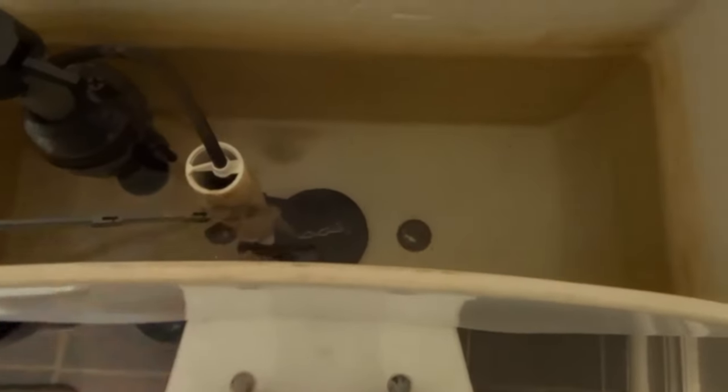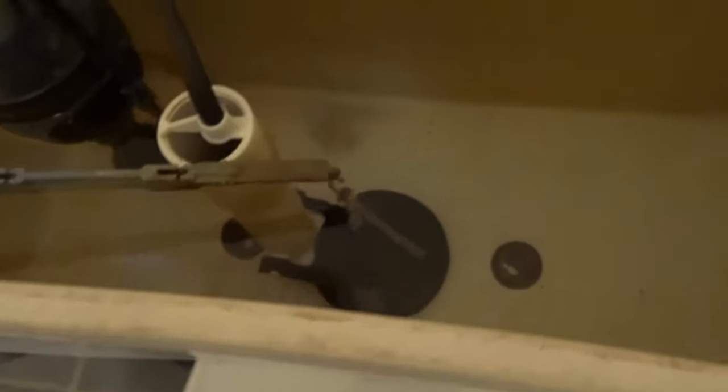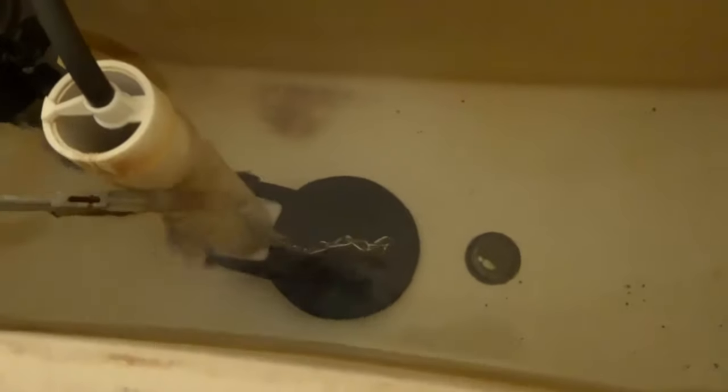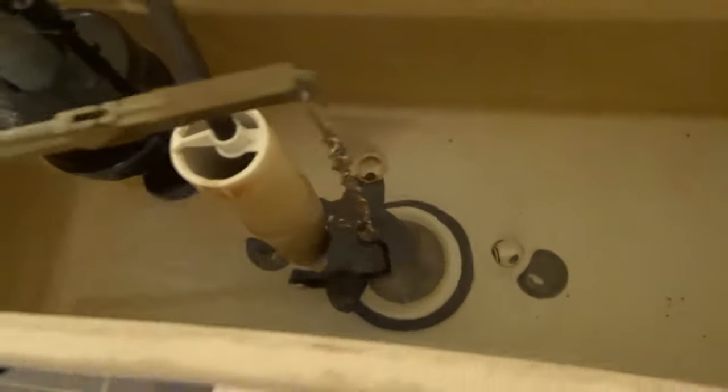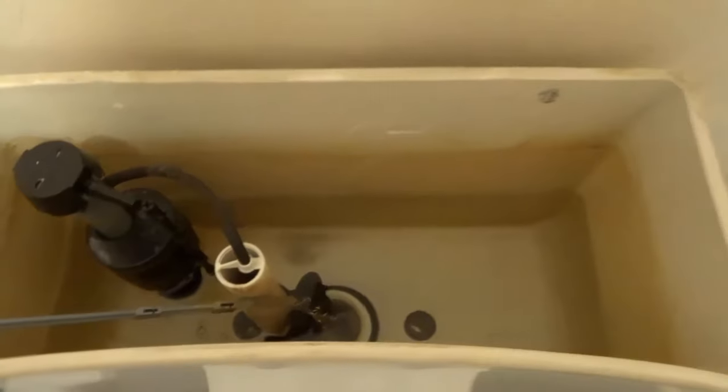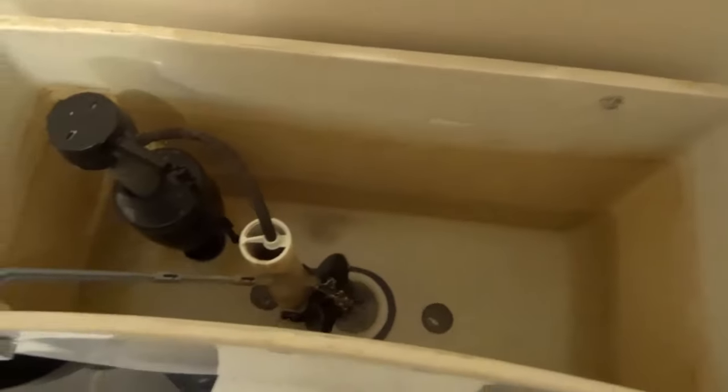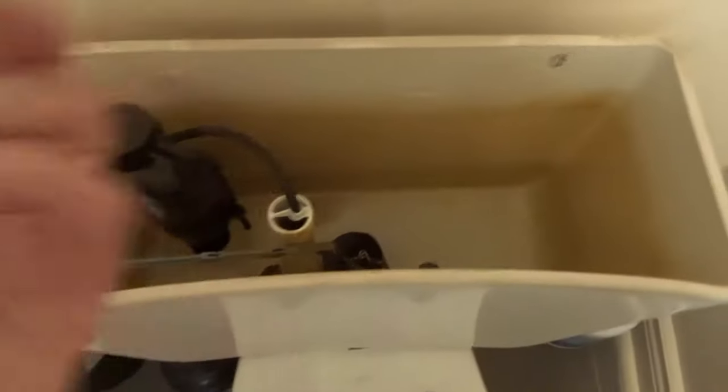When I pull up on the chain using the flush lever, there's only a little bit of slack and it pulls the flapper up all the way. If you have too much slack, it won't pull the flapper up all the way, which will cause it to close too fast, which will give you a weak flush. So all that you got to do is just adjust the chain.